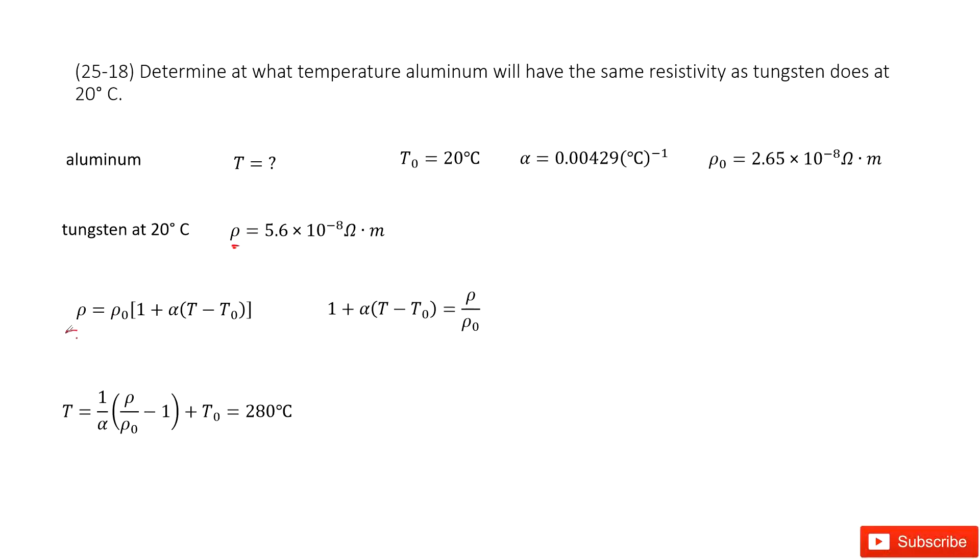In this function you can see rho is given. You need to find T. It looks like you need to find rho naught, alpha, and T naught.